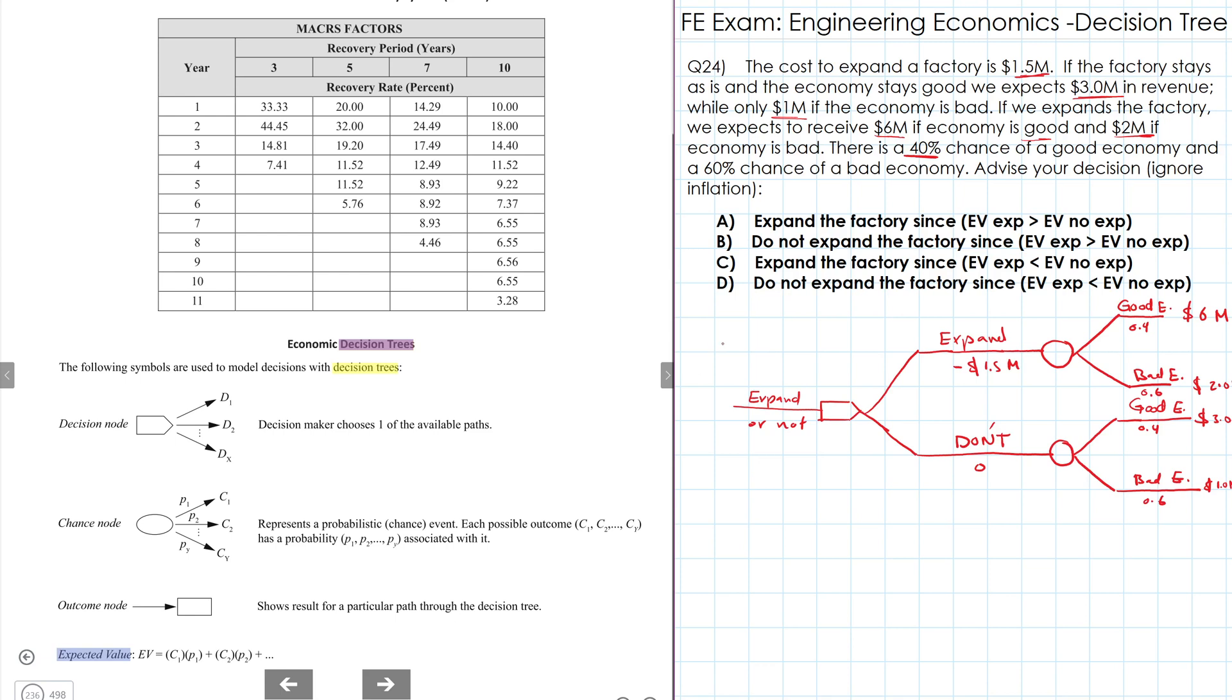Now in order to make a decision, we need to evaluate the expected value for each path. And the expected value formula as shown here, it's each percentage multiplied by the outcome of that path. So let us start with expanding the factory.